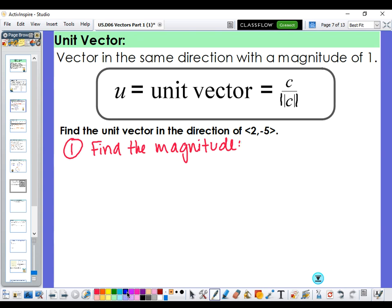And we'll take that original vector that we have, <2, -5>. And when we calculate the magnitude of that vector, we are going to take each component and square it, add them together, and then square root. So we end up with 4 plus 25 underneath our radical, which is the square root of 29. It cannot be reduced, so step one is complete.